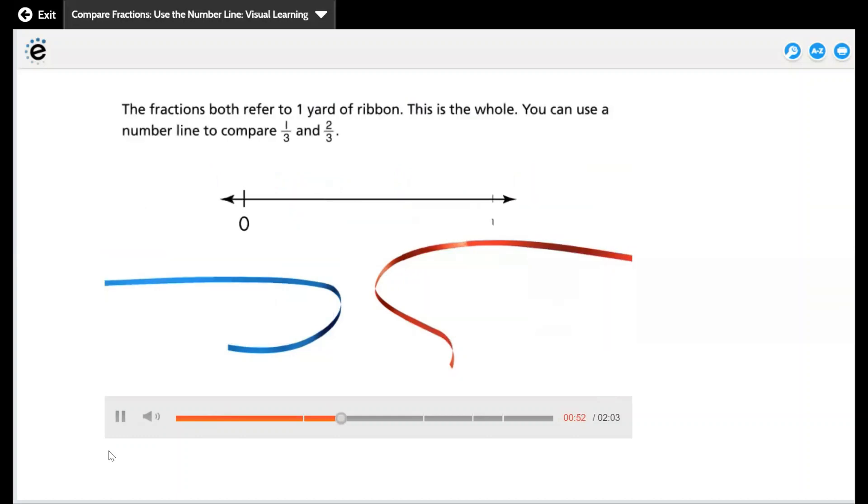The fractions both refer to one yard of ribbon. This is the whole. You can use a number line to compare one-third and two-thirds.